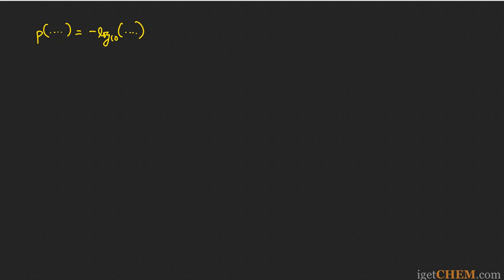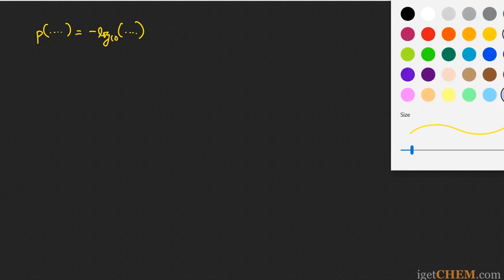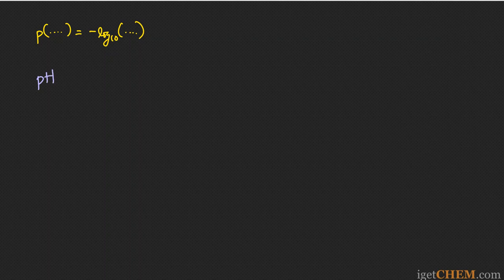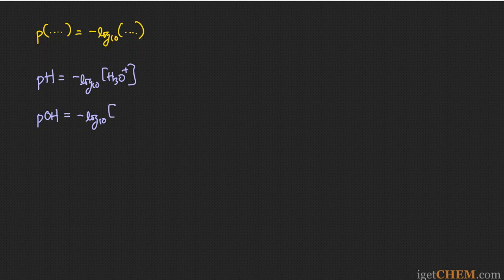If you apply that definition to pH, then pH is defined as negative log base 10 of the H+ concentration, which is equivalent to the H3O+ concentration. Similarly, pOH is defined as negative log base 10 of the OH- concentration.